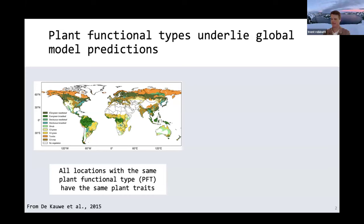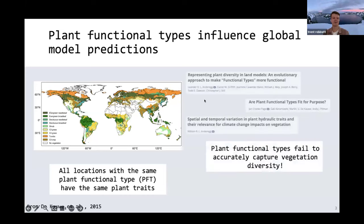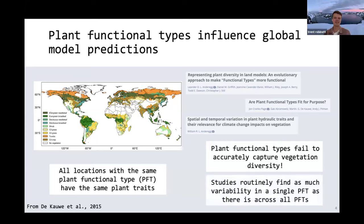But this is known to be a pretty big issue in our current state of land models, where many studies have consistently shown that plant functional types really fail to accurately capture vegetation diversity. Often studies find that there's as much variability in many of these important plant traits within a single PFT as there are across all the plant functional types.